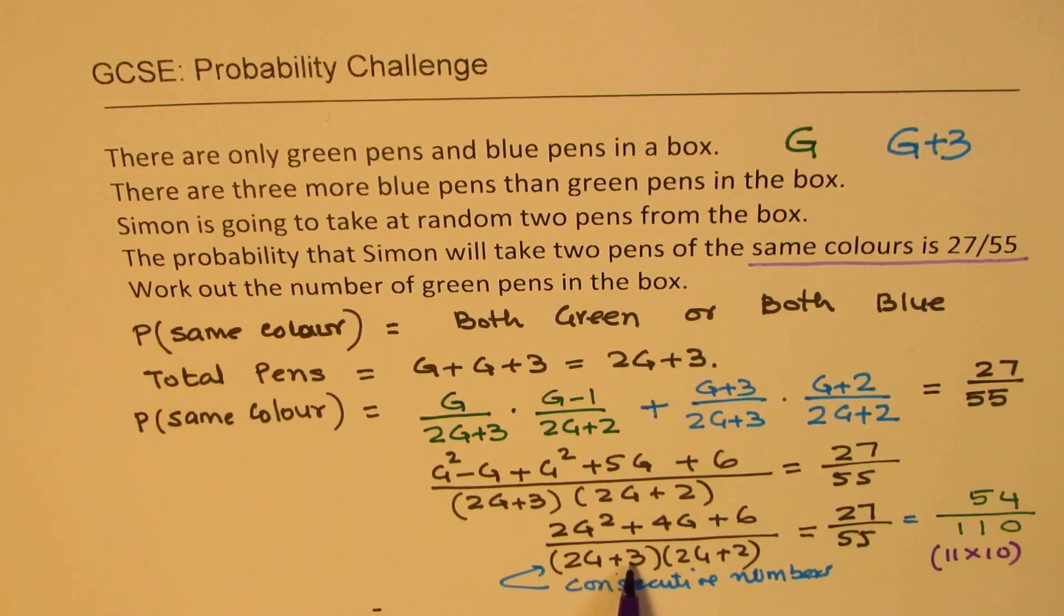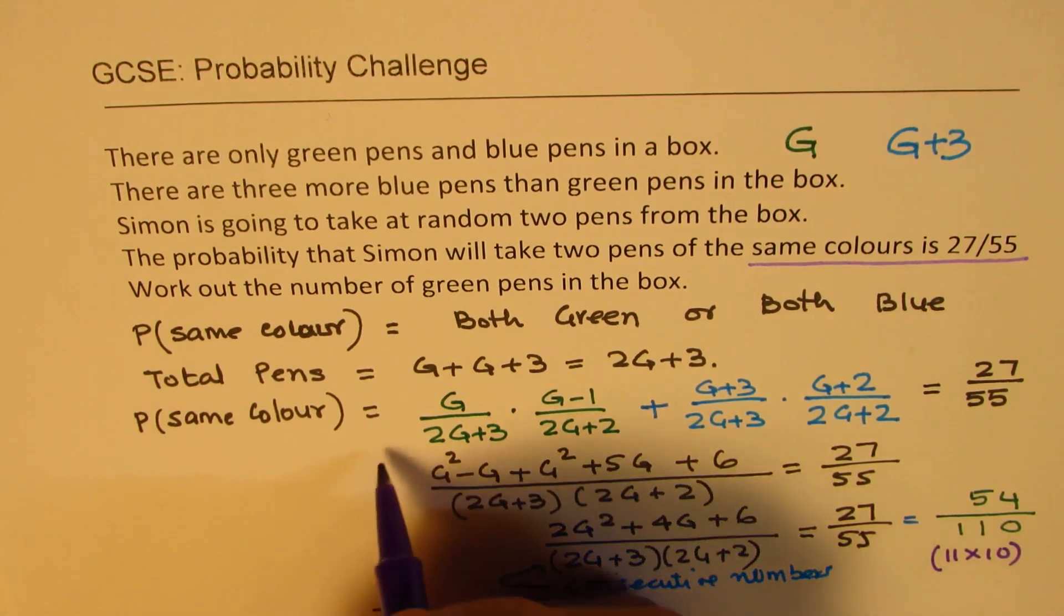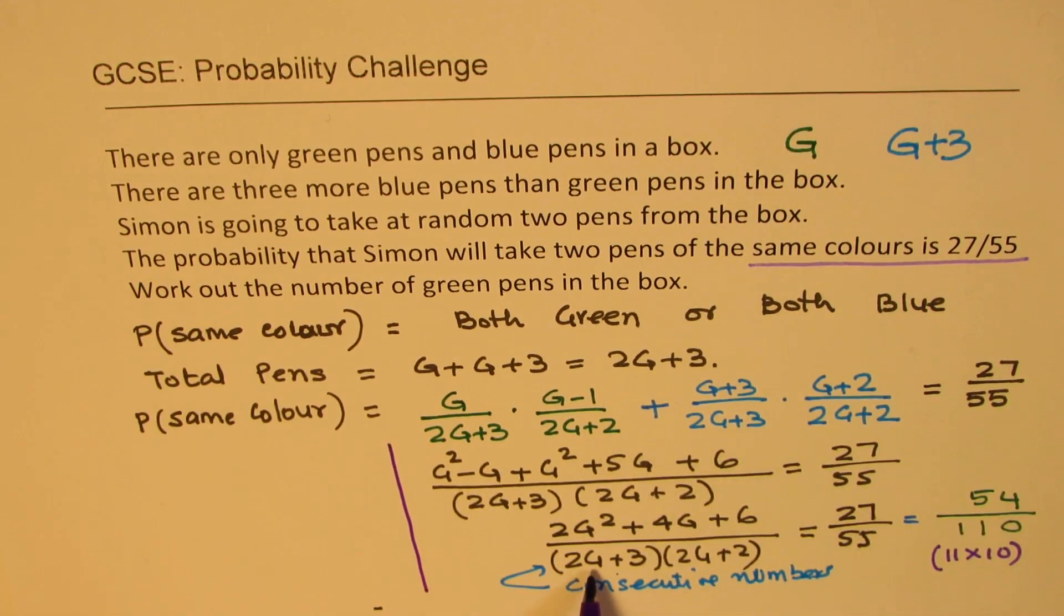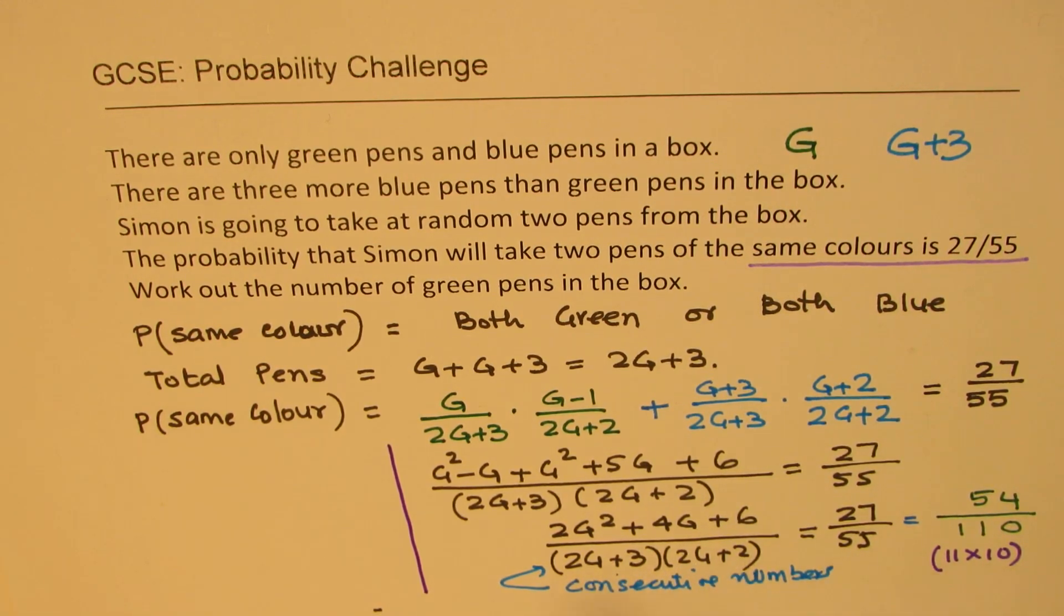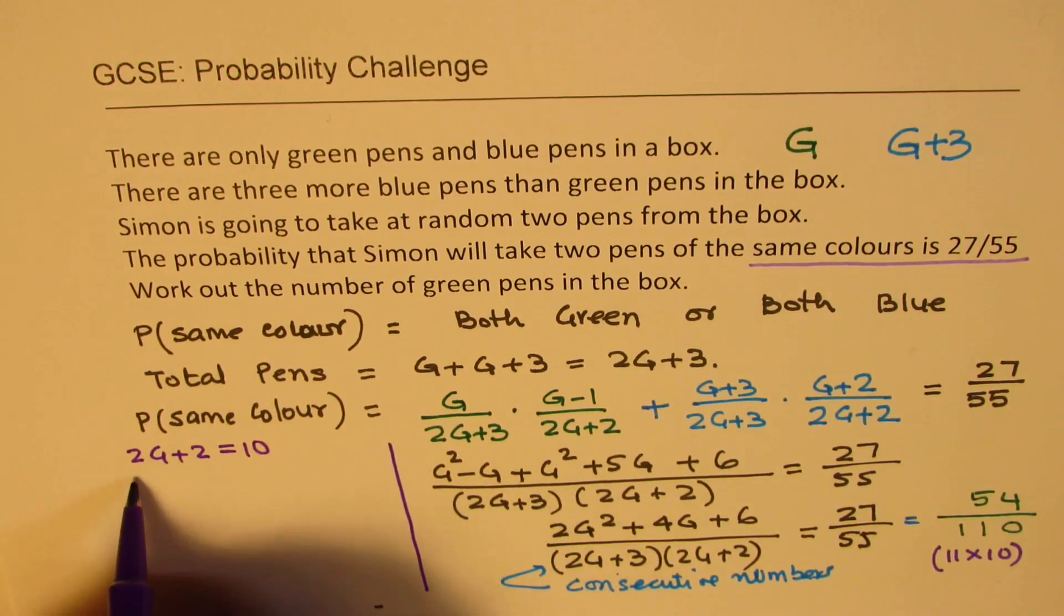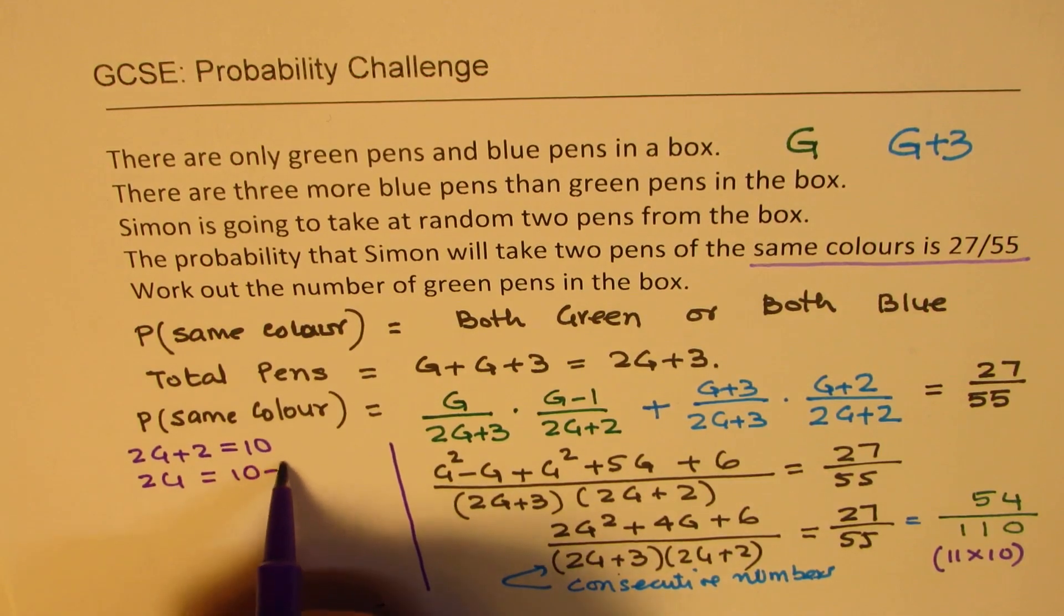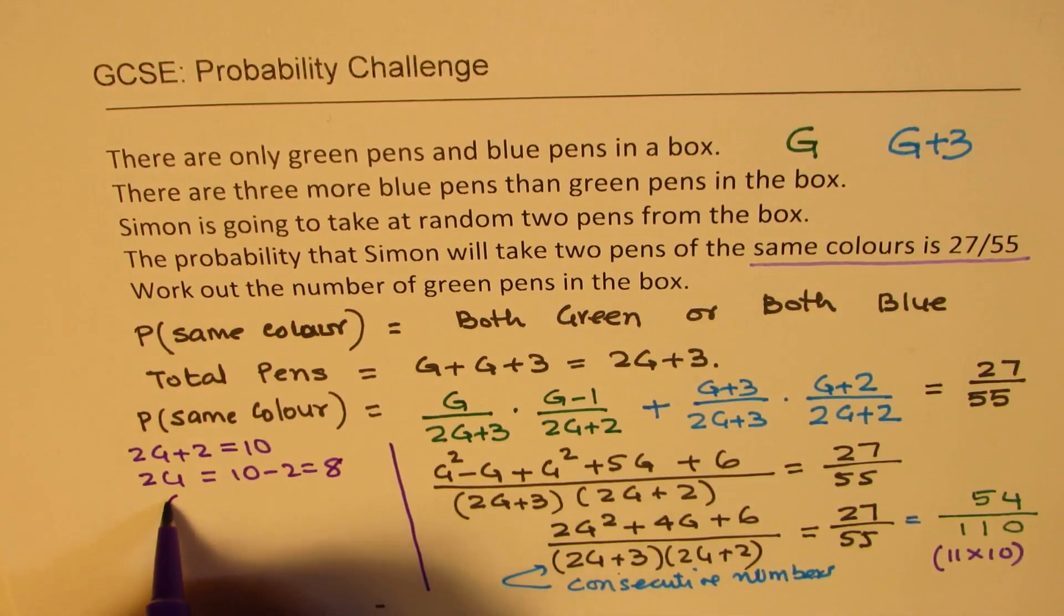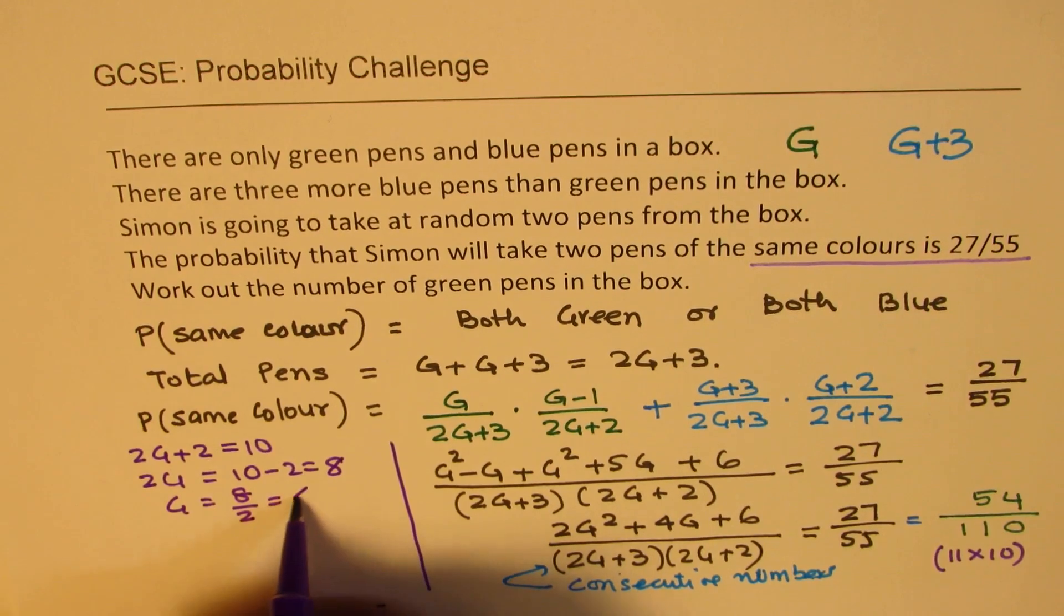That really means that 2G plus 3 could be 11 and 2G plus 2 will be 10. I have to check if the numerator gives me 54 or not. Let's check it out. Let me work on this side. We have hint that 2G plus 3 is 11 or we can say 2G plus 2 is 10. Let's work with 2G plus 2 equals to 10. That gives us 2G equals to 10 minus 2 which is 8 and G is 8 over 2 which is 4.